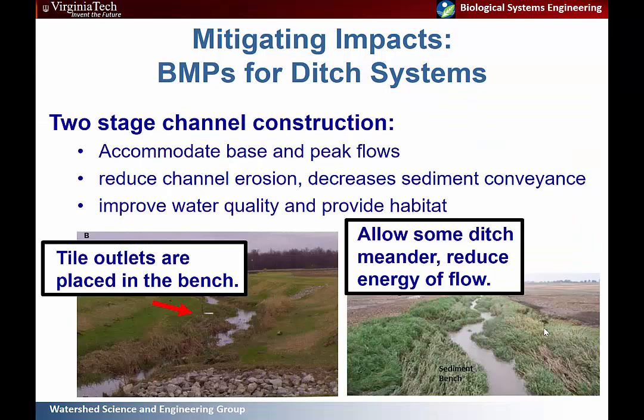Two-stage channel construction accommodates both base flows in the lower part of the ditch and peak flows in the wider upper area. Tiles are also placed in the bench of these two-stage ditches — when water is released it falls on vegetated soil protected from erosion. Additionally, allowing some ditch meander reduces the energy of flow, which also reduces scour.